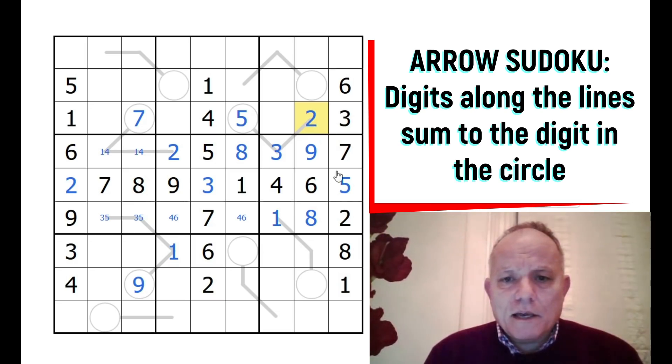These two must be consecutive numbers because of that 1. Could be 4-5, and after that we're out of consecutive numbers in this column. The 3 in the column must be down here. This is 1 and 7 - 7 in the circle, 1 outside it. These two add up to 7 and could be 5-2.